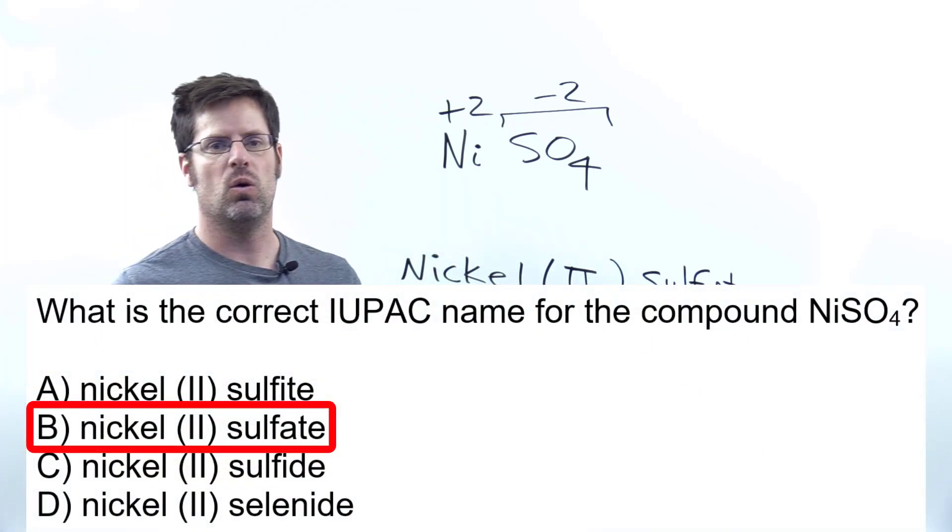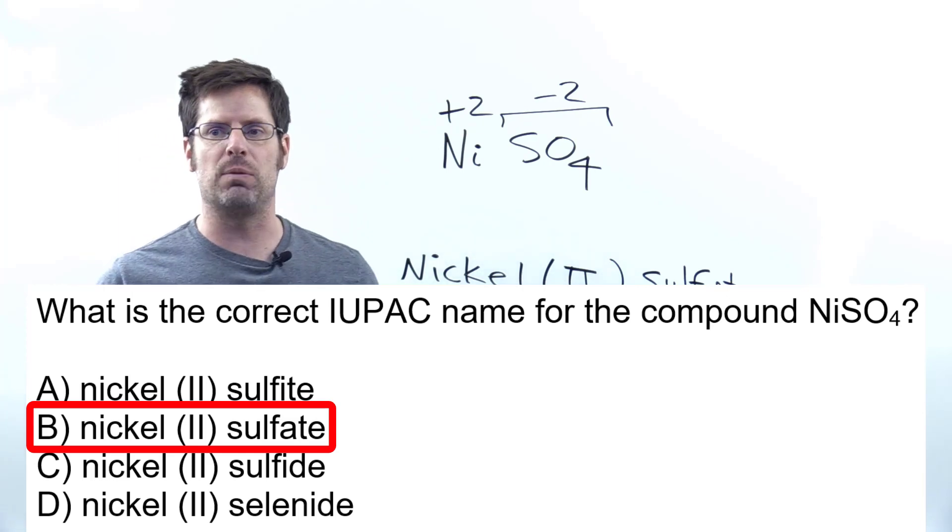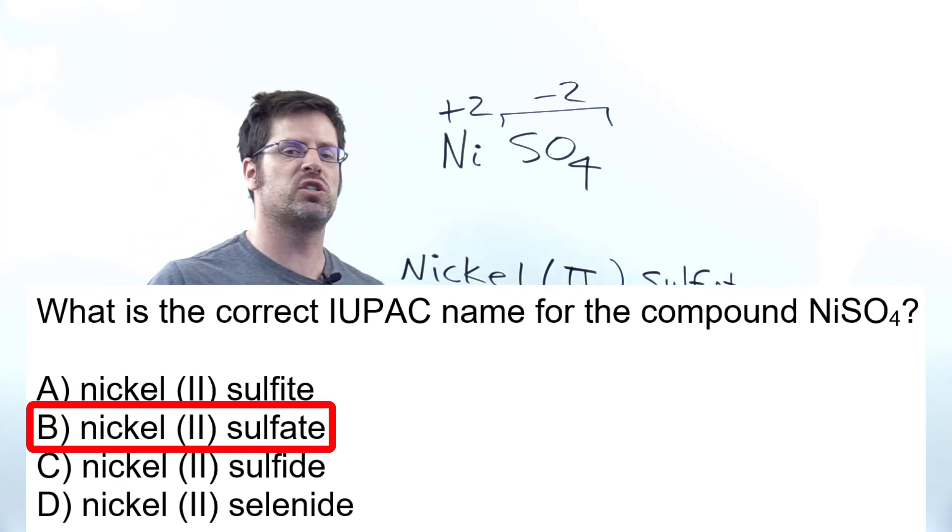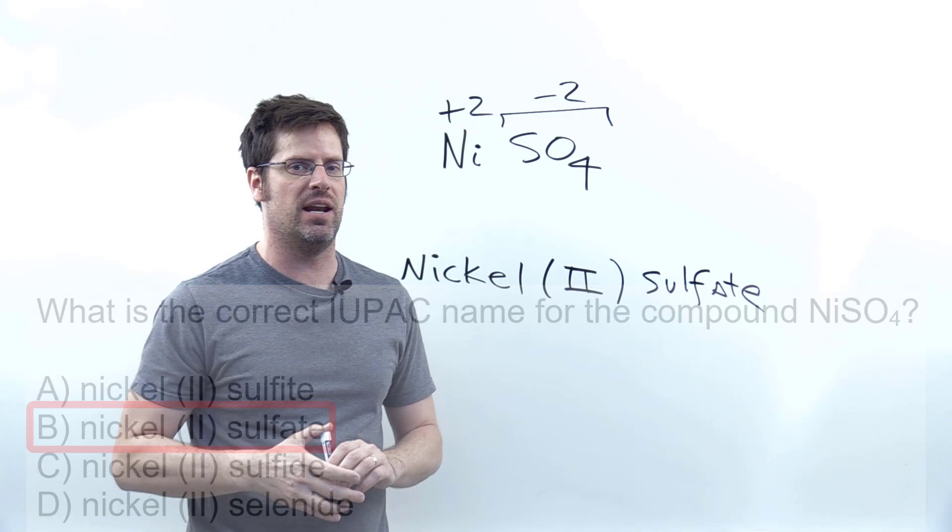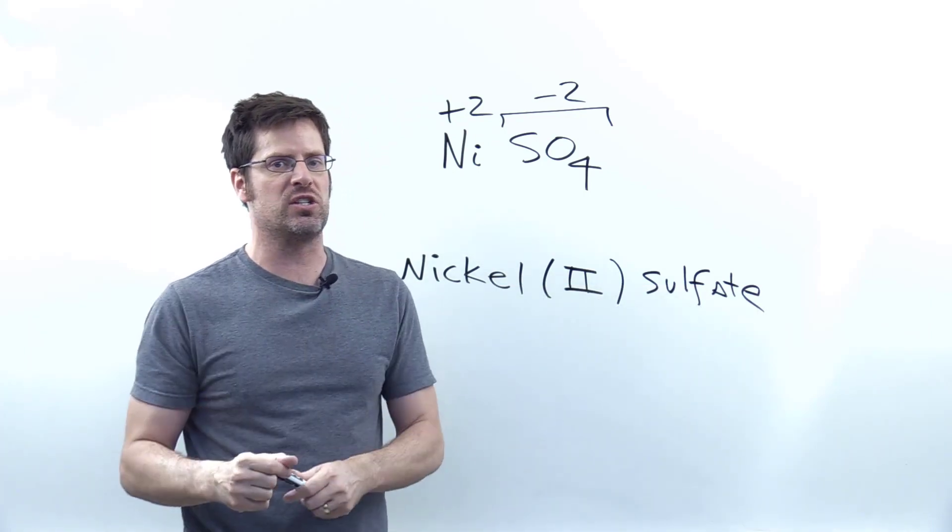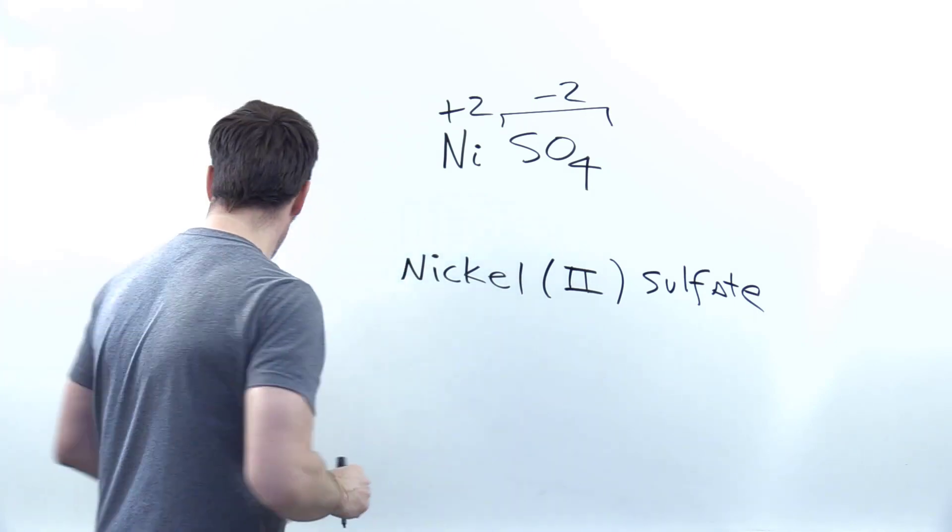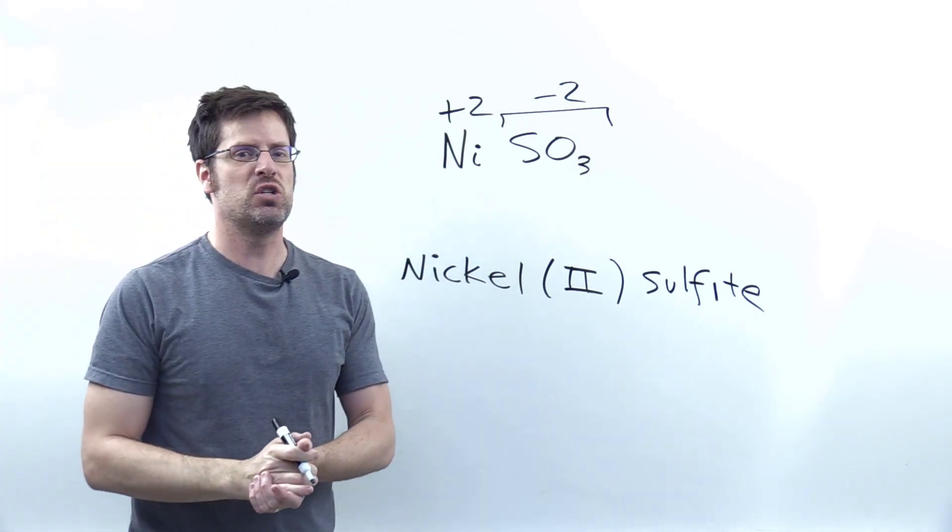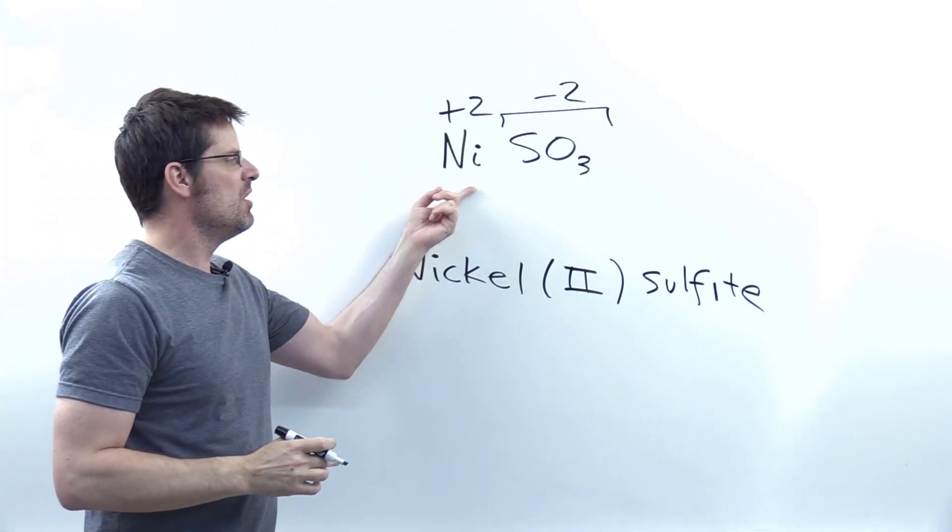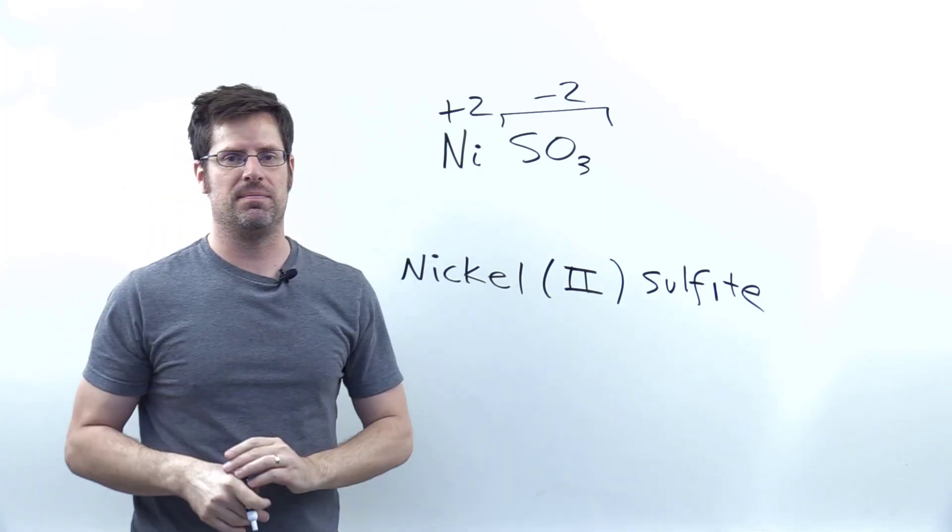Now, in case you're interested in the others, what would the formula for option A, which is nickel (II) sulfite be? Well, sulfite is a different polyatomic anion that I do not require my college students to memorize, but it has a formula of SO₃, not SO₄, though it still has a negative two charge. Hence, that is the formula for nickel (II) sulfite.